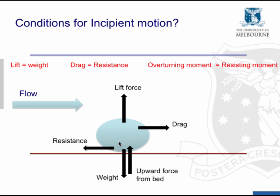Now there are three conditions that can produce incipient motion. The first one is where the lift force equals the weight force and at that point the particle is about to lift up off the bed. The second one is where the drag force equals the resistance force and at that point the particle is about to slide downstream. And the third one is where the overturning moment produced by drag and resistance, which act at the upper and lower sides of the particle respectively, equal the resisting moment from the particle.